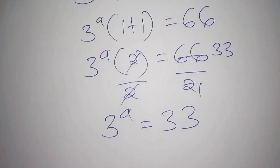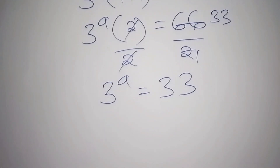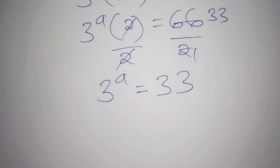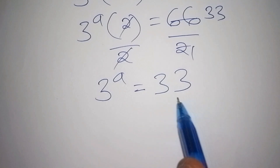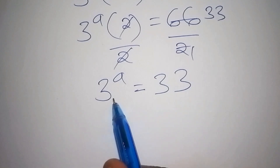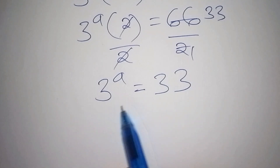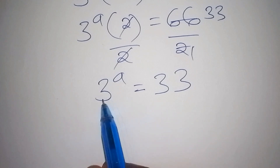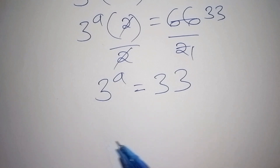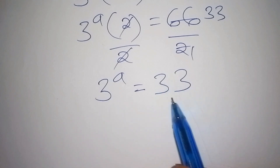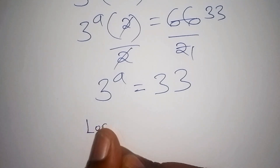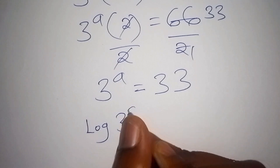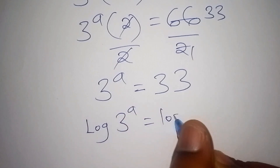Now it is impossible for us to change 33, which is a whole number, to base 3. We cannot express 33 as a power of 3 directly, so we shall introduce the logarithm on both sides.